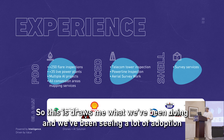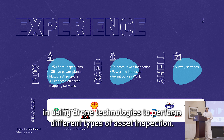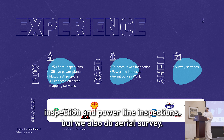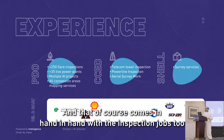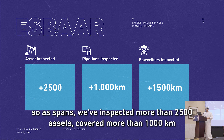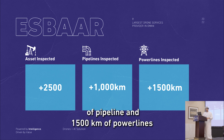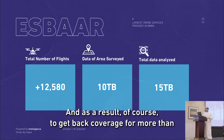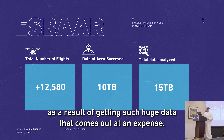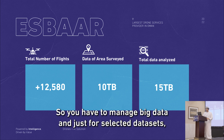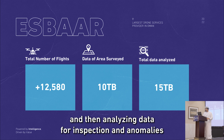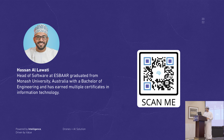We've seen a lot of adoption using drone technologies for asset inspection. We've done more than 250 live flare inspections, power plant inspections, and telecom tower inspections, and we also do aerial surveys. We've inspected more than 2,500 assets, covered more than 1,000 kilometers of pipeline and 1,500 kilometers of power lines, logging more than 12,580 flight hours. The rich data comes at an expense — for selected datasets, that can be 10 terabytes or more for surveying, and over 15 terabytes for inspection and anomaly detection data.